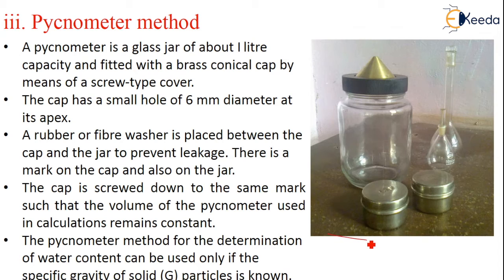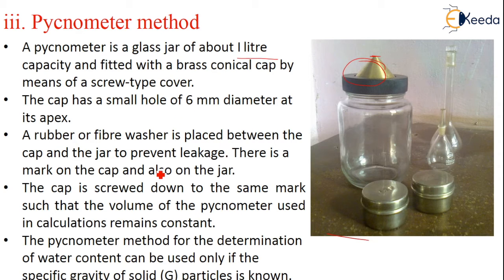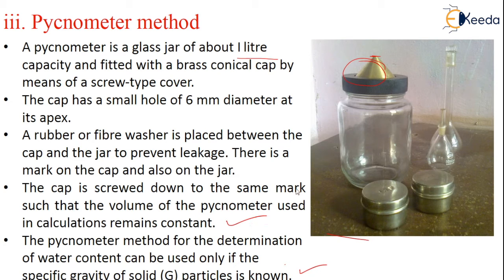Coming to the next method, that is the pycnometer method. The pycnometer is a glass jar of about 1 litre capacity, fitted with a brass conical cap by means of a screw-type cover. The cap has a small hole of 6 mm diameter at its apex at the top. A rubber or fiber washer is placed between the cap and the jar to prevent leakage. There is a mark on the cap and also on the jar, so the cap is screwed down to the same mark to keep the volume of the pycnometer constant. This method can be used for determination of water content only if the specific gravity of the solid particles is known.